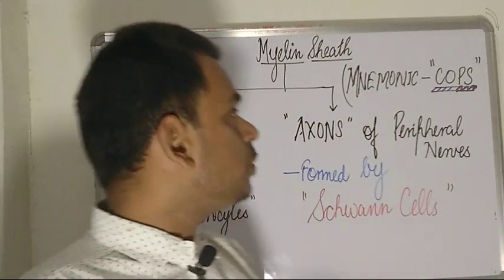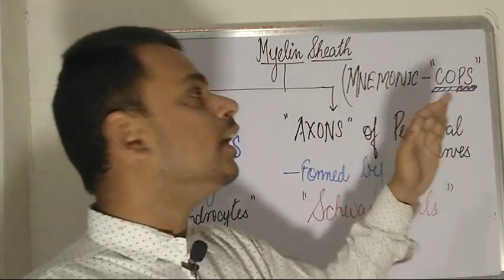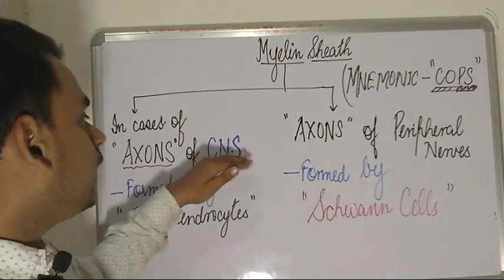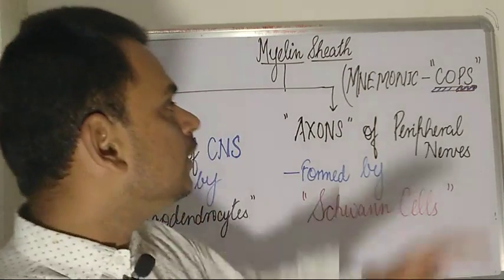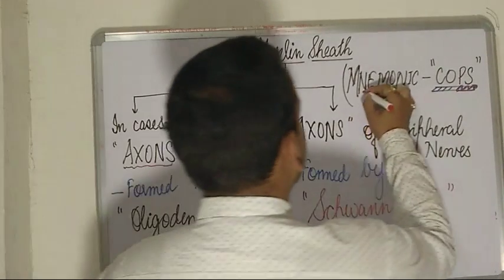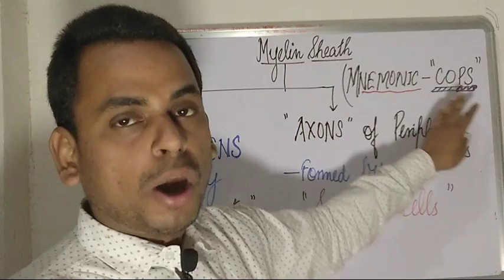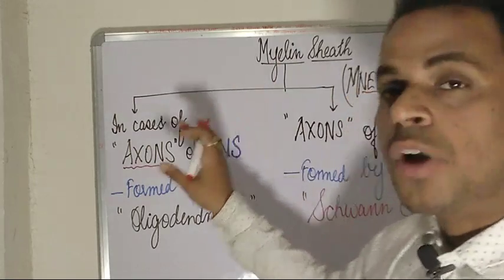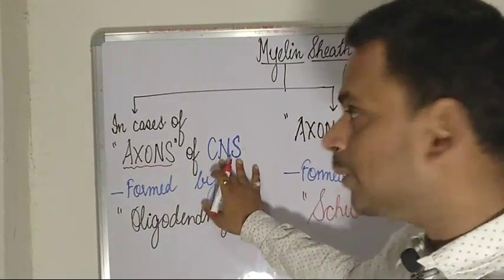The mnemonic I have made to easily remember the cells from which the myelin sheath is derived — in the central nervous system and in the peripheral nerves — is the word COPS: C-O-P-S. COPS are usually the policemen. Just by remembering this mnemonic, we can easily determine what cells the myelin sheath is derived from in the axons of the central nervous system and the peripheral nerves.